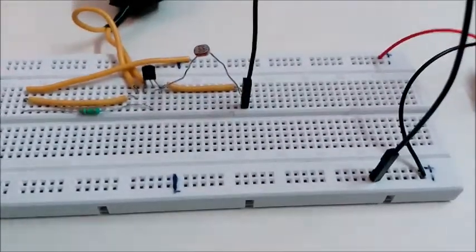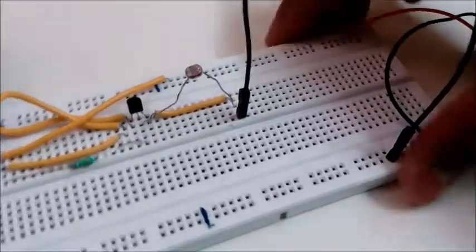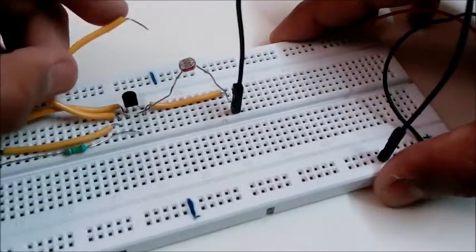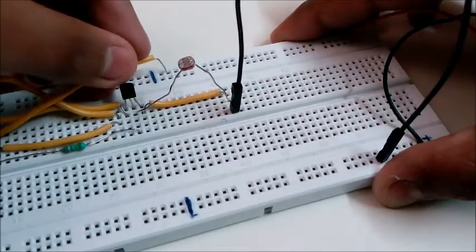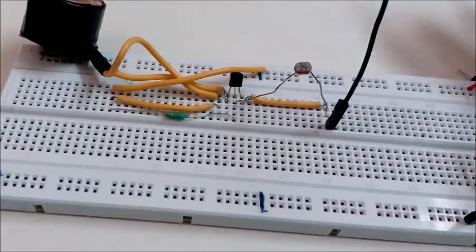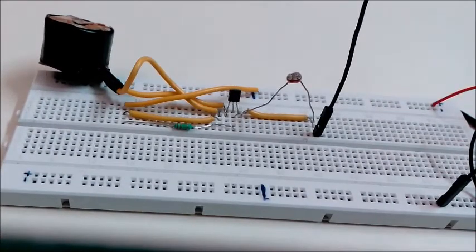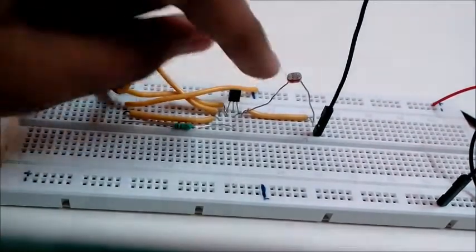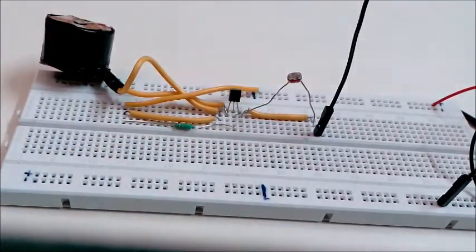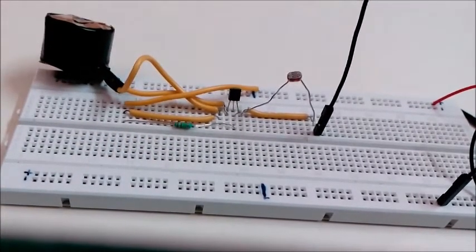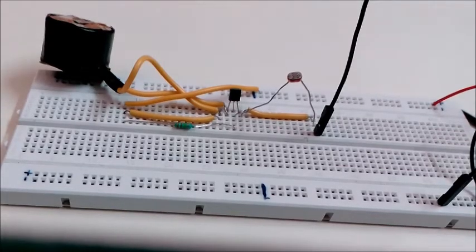As you can see, there's a tube light there and the light is scattering on this LDR surface. How do I explain? I need to draw a diagram.